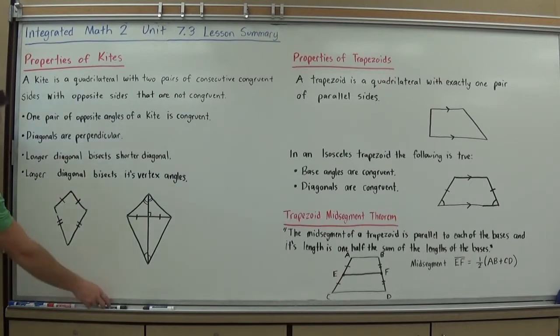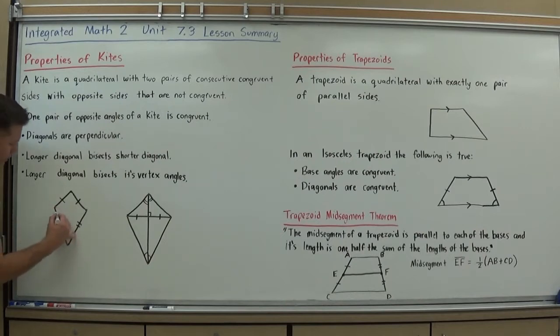And the other rule is that opposite sides are not congruent. So if you have one side here, the side opposite it cannot be congruent. You have a side here, the side opposite it cannot be congruent. The rule must be in place for it to be considered a kite.